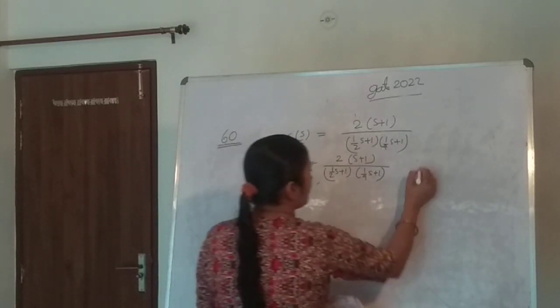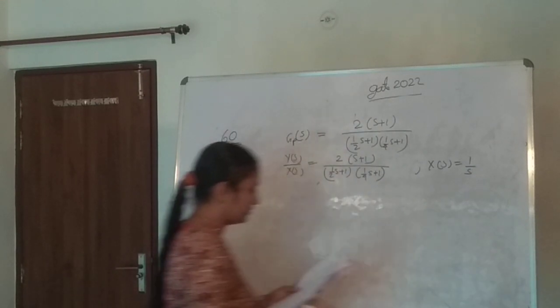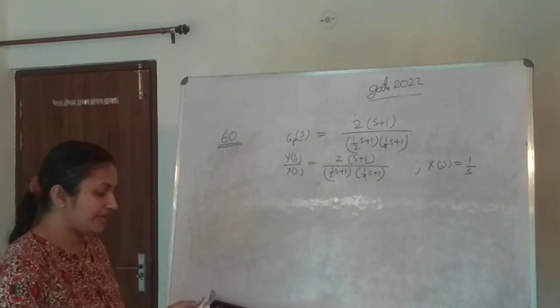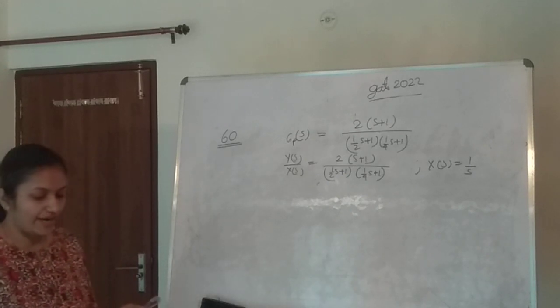For a unit step input, where x(s) equals 1/s given at time t equals 0, the time at which the output response reaches the maximum is being asked.